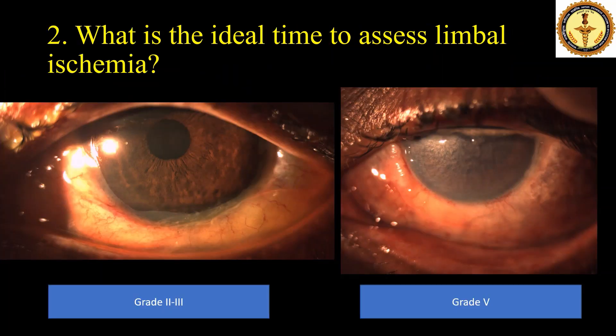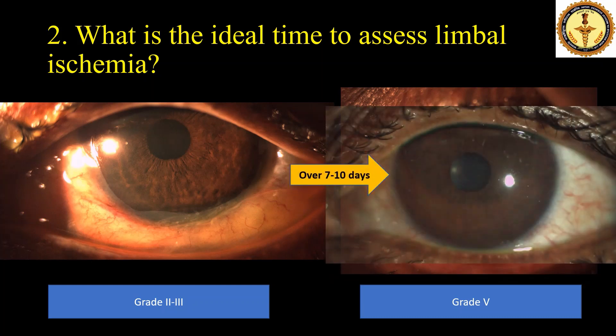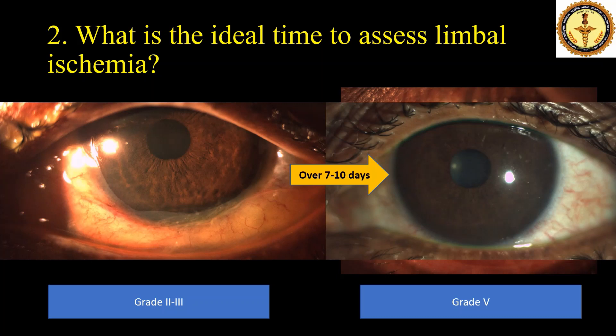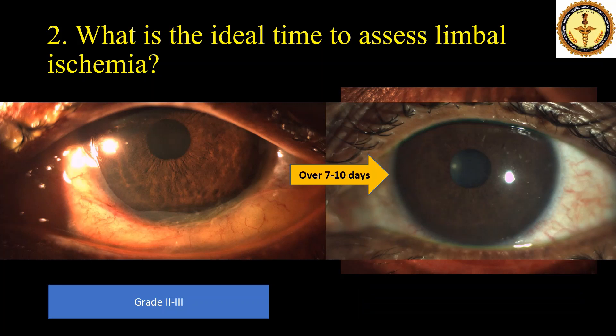Limbal blanching and conjunctival chemosis can be seen in severe grades of ocular surface burn, or even in relatively milder burns due to overlying conjunctival edema. That means limbal blanching does not always correlate to the degree of limbal ischemia, and this conjunctival edema resolves with medical management using topical steroids over 1 to 10 days. However, limbal blanching that does not respond to topical steroids over 1 to 10 days likely represents true limbal ischemia and requires limbal revascularization procedures.